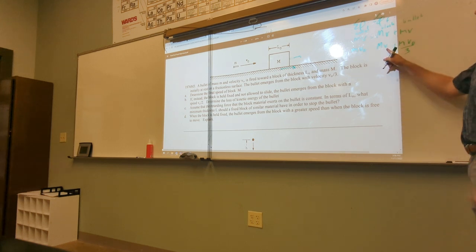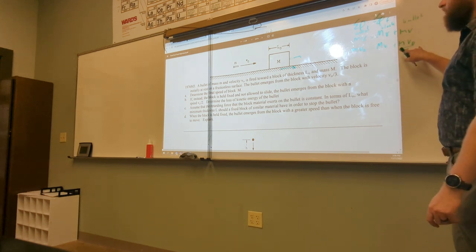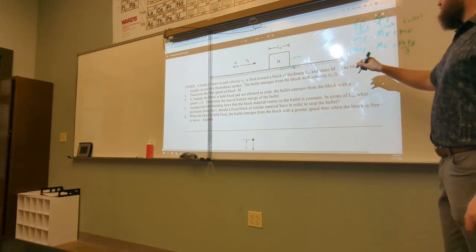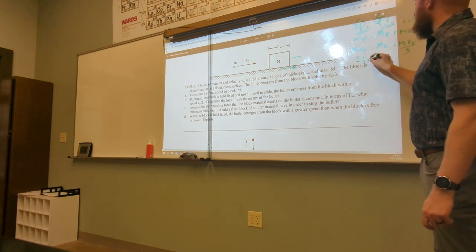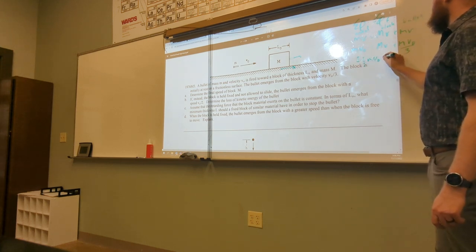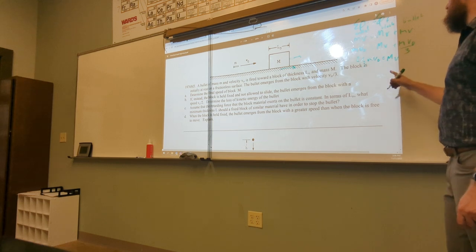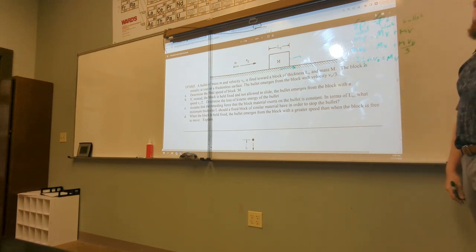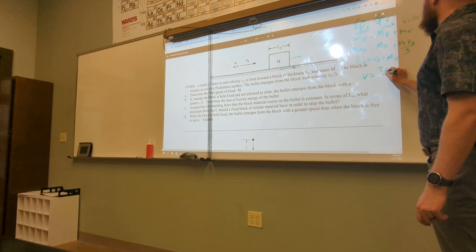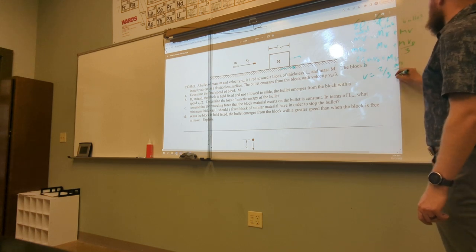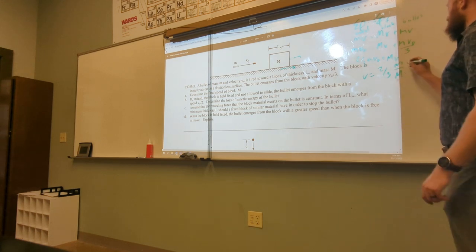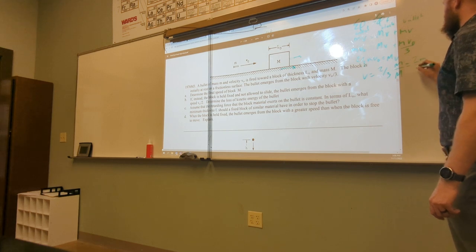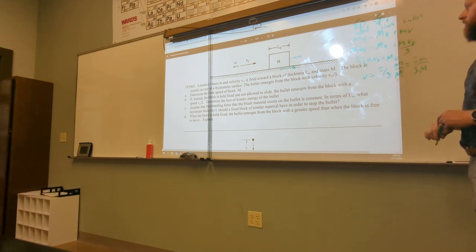So now I need to solve for this V here. I will subtract this, so I'll have two-thirds m V naught equals capital M V, and then to solve for V I just divide by capital M. So I'll have V equals two-thirds m divided by capital M. You could also write this as two lowercase m over three capital M, and so that is A.